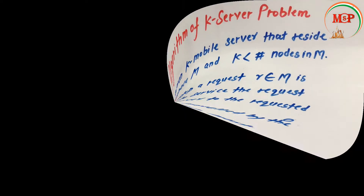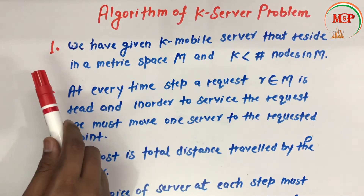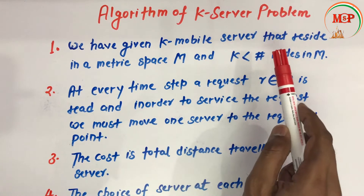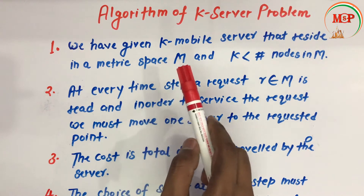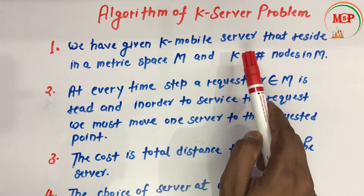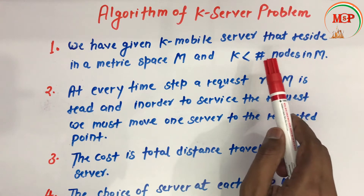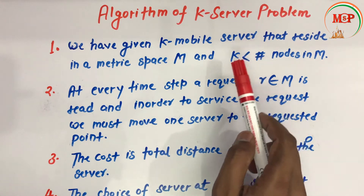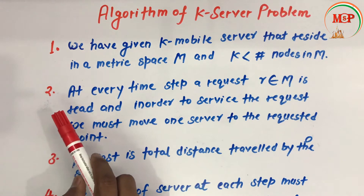In this video we are going to study about the topic: algorithm of the k-server problem. The first point is we are given k mobile servers that reside in a metric space M, where k is less than the number of nodes in M. That is, the number of nodes in the metric space is greater than the number of k mobile servers.